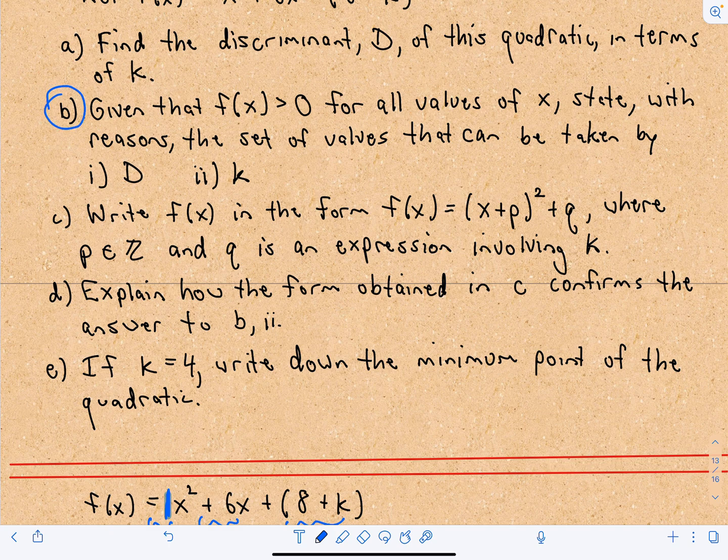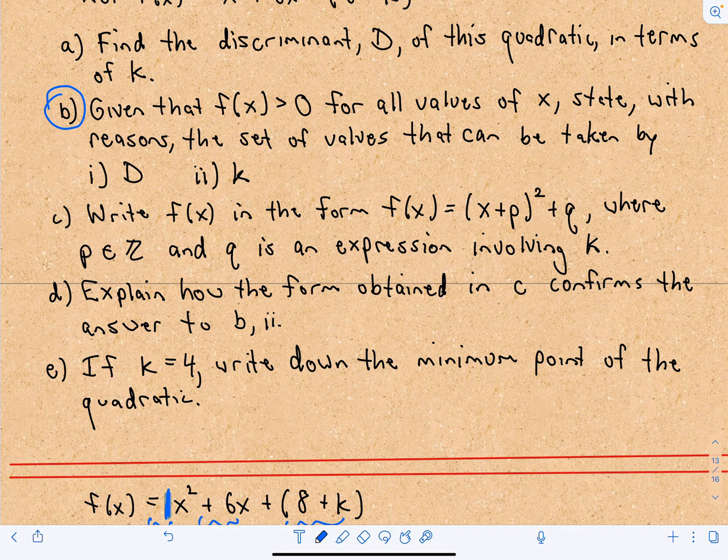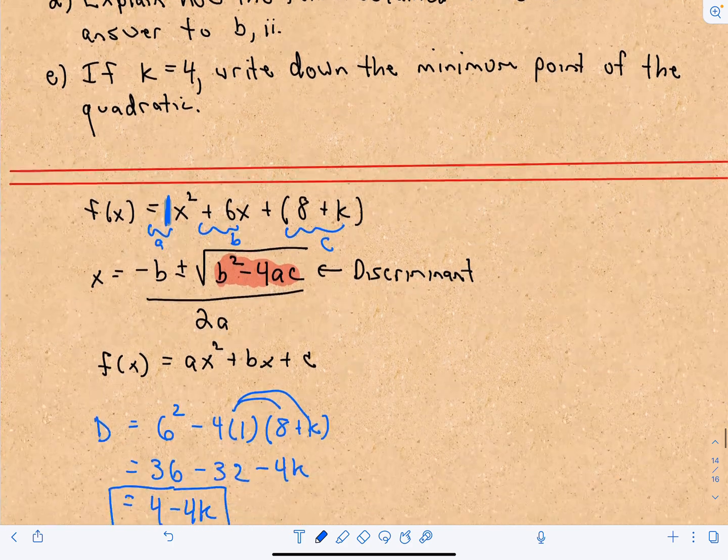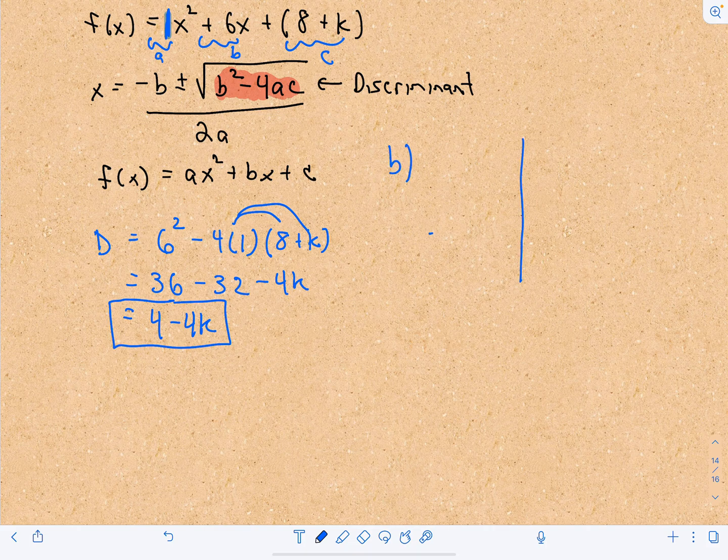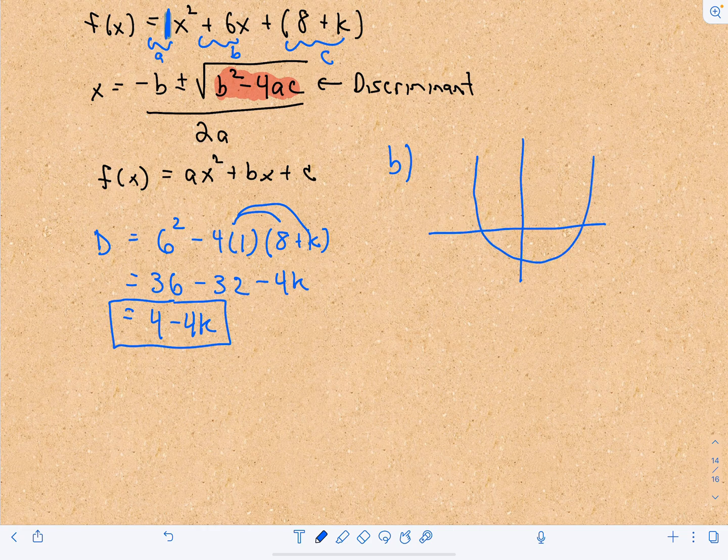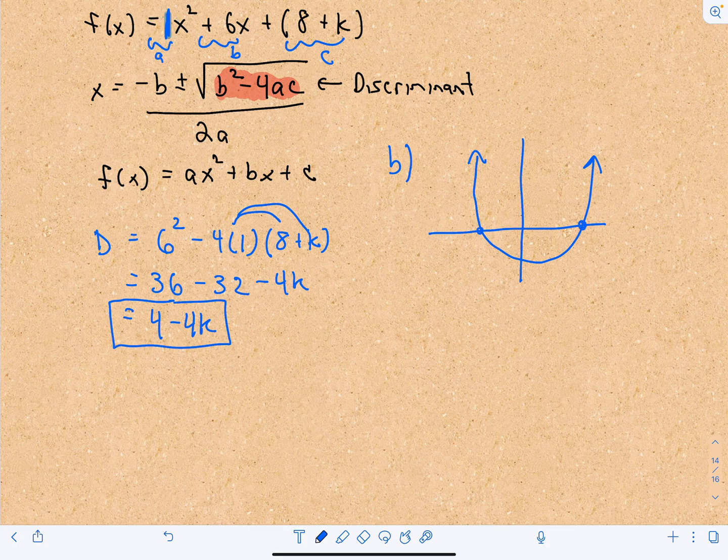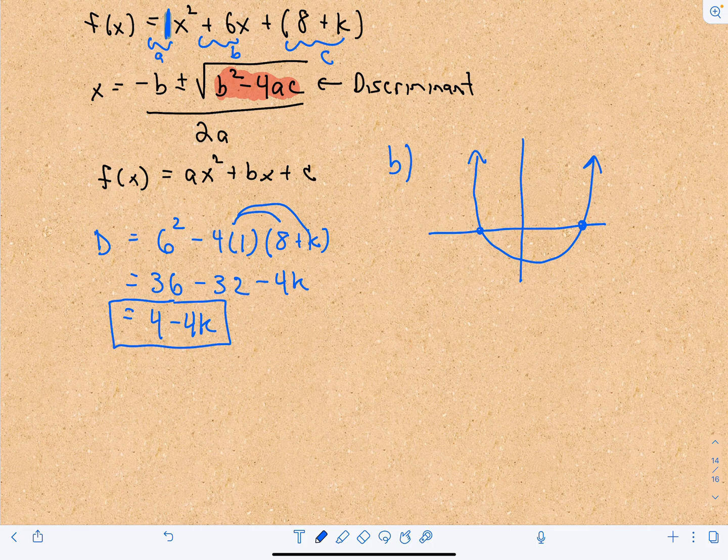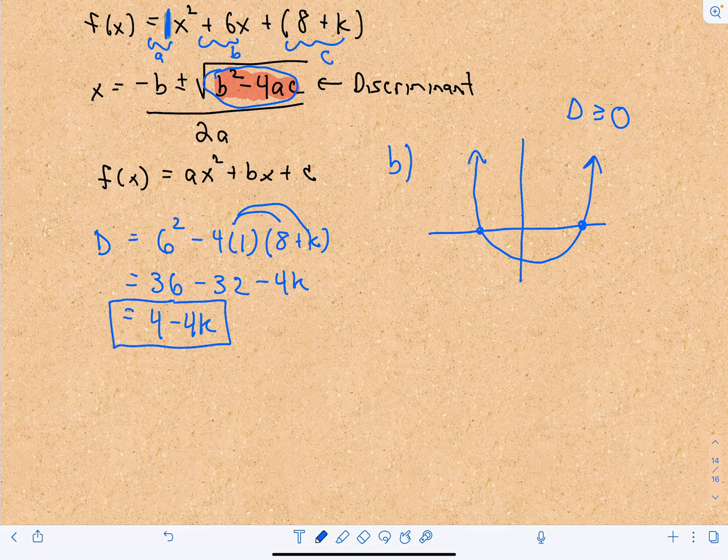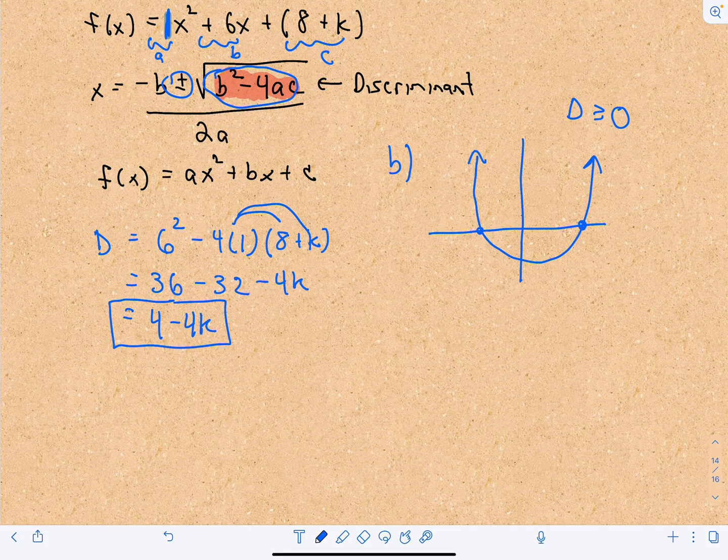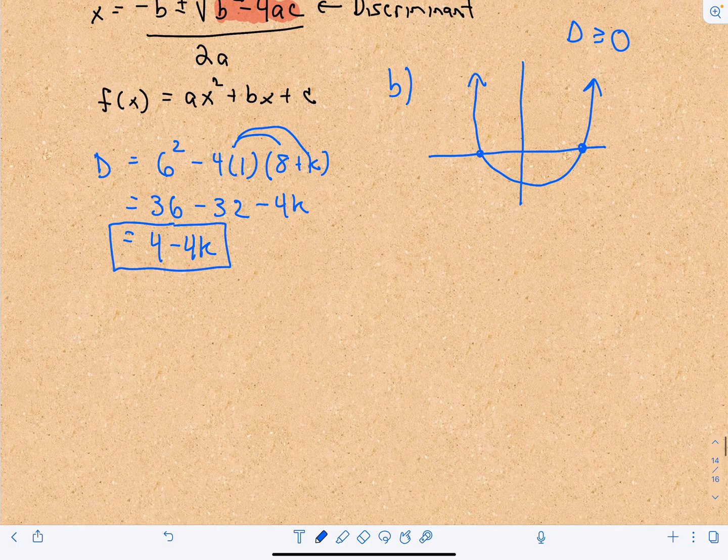Okay, so for part b, it says given that f(x) is greater than 0 for all values of x, state with reasons the set of values that can be taken by the discriminant and also by k. So just to maybe make this a little visual here too. If our quadratic, and notice our coefficient on our quadratic is a positive 1, so we know that our parabola is going to open upwards. If we had two solutions, that means our discriminant is going to be a positive number.